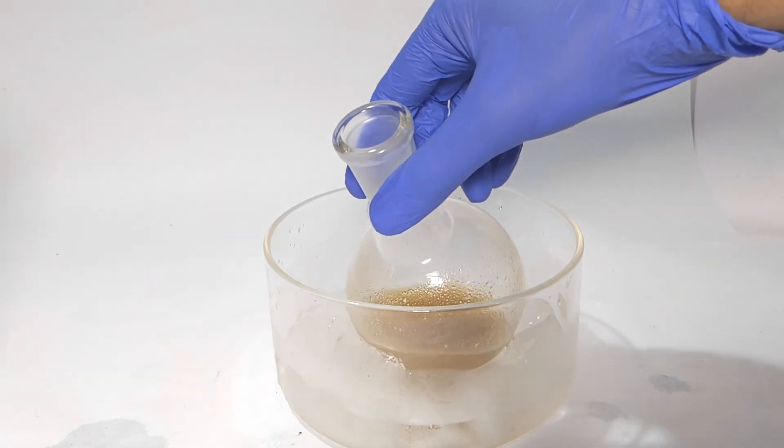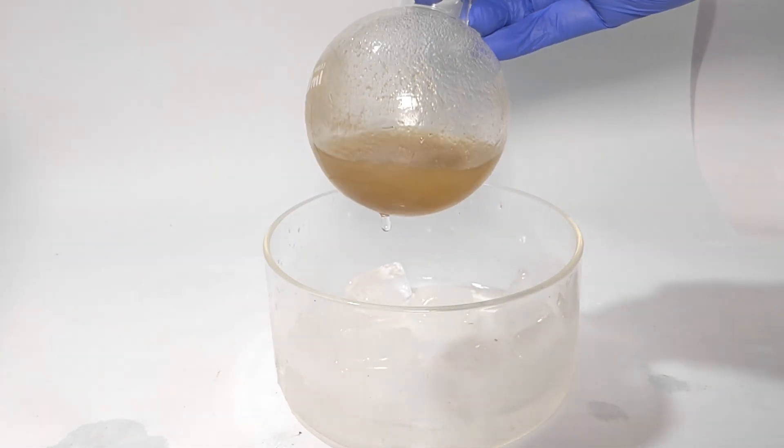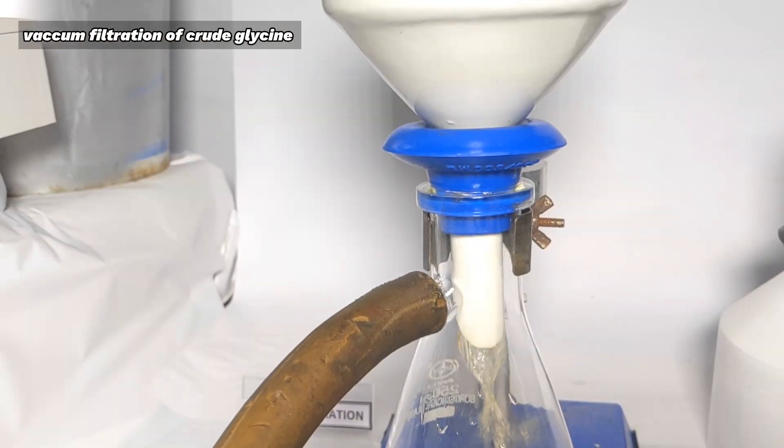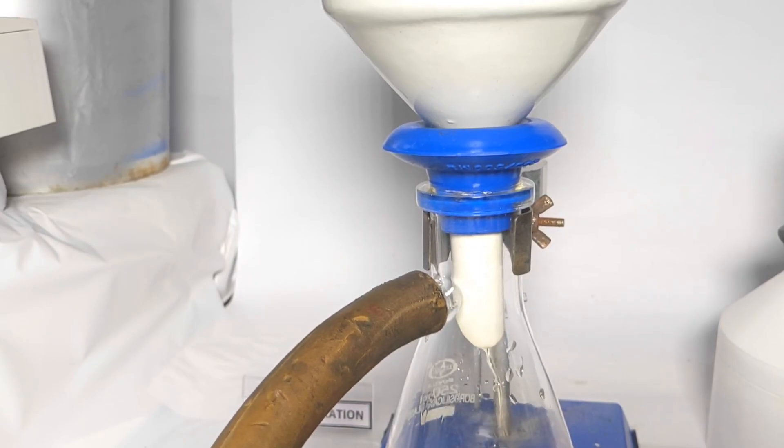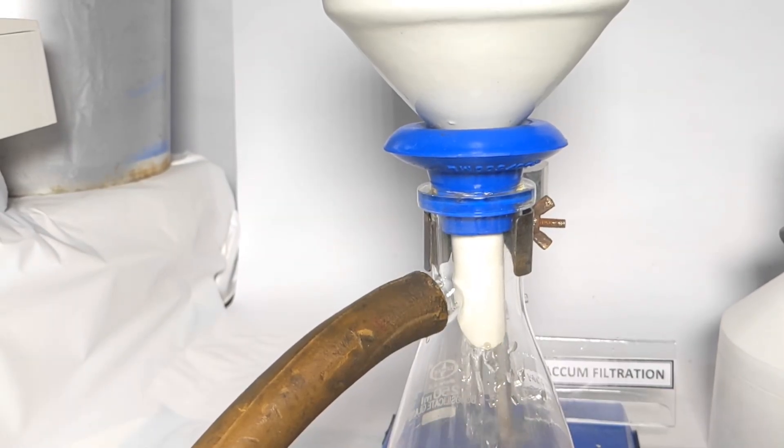This is the crude glycine which contains ammonium chloride as the chief impurity. The crystals were recovered by vacuum filtration. Methanol was used to wash the crude product in the Buchner funnel itself and this will remove most of the ammonium chloride impurity.